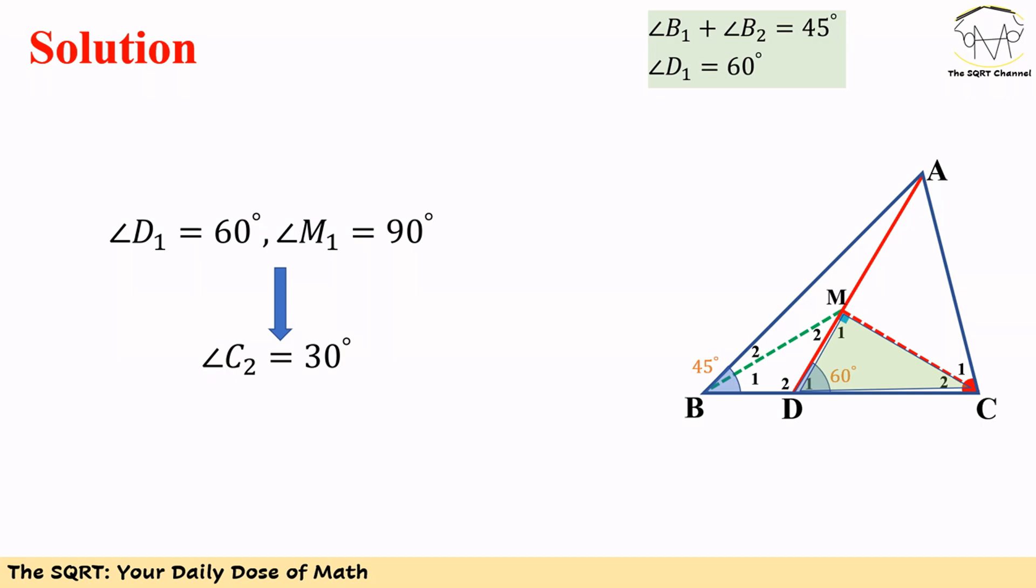To solve this problem, we are going to add two lines. First, in triangle ADC, we are going to connect C to AD using the height of the triangle. Let's name this CM. Then we connect B to M. Now let's focus on triangle CMD.